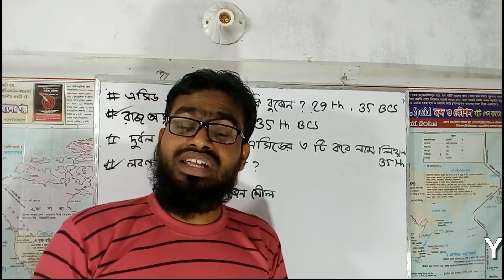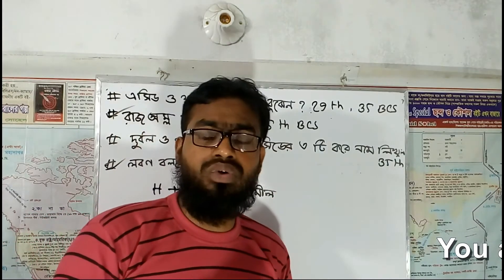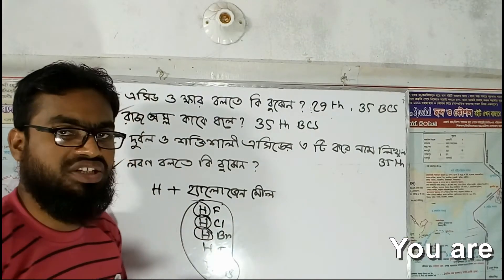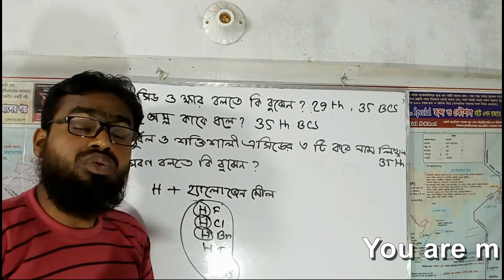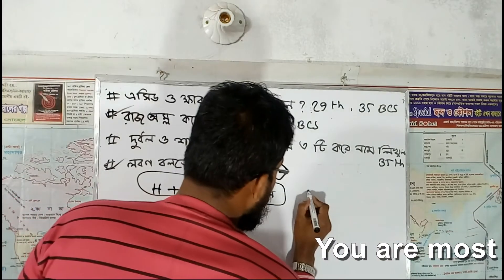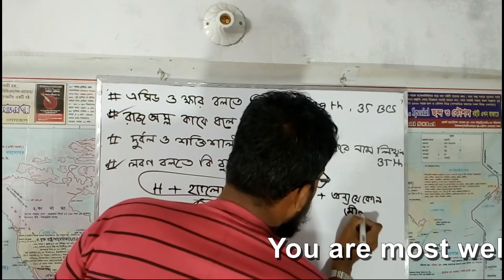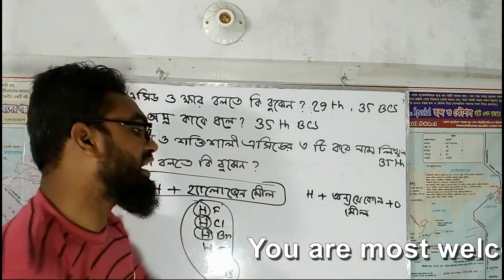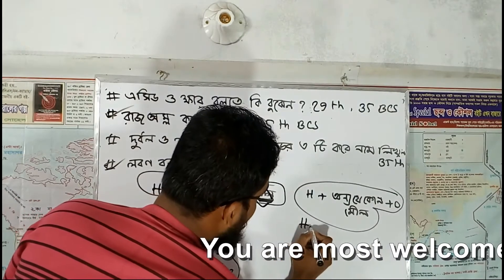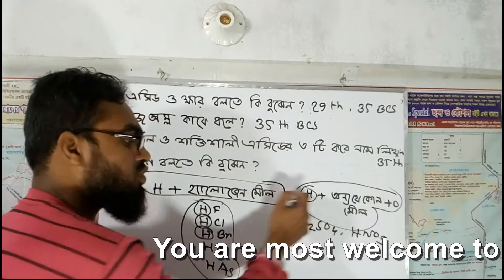Acid will be identified in the case where hydrogen takes place at the first position. Again, hydrogen is the first element. The key rule to keep in mind is that the compound will be an acid when hydrogen appears first. For example, H2SO4 is sulfuric acid, and HNO3 is nitric acid — hydrogen is used at first.